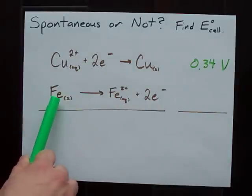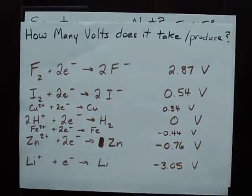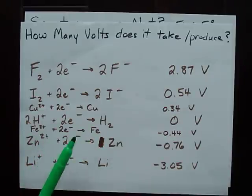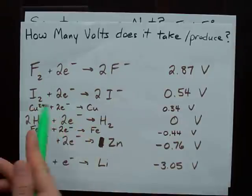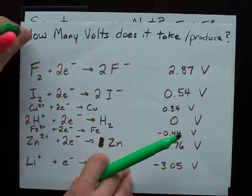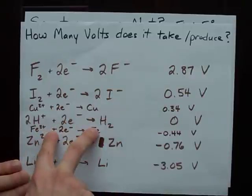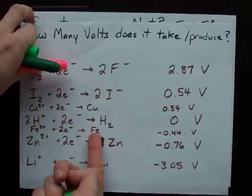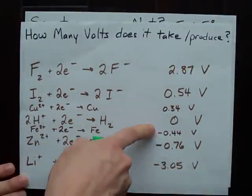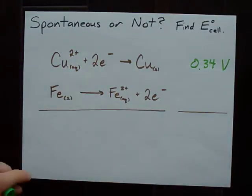Now, here I've got iron becoming iron 2+ and 2 electrons. What I have written in my table of reduction potentials is not that. I've got iron 2+ and 2 electrons becoming solid iron. That's the exact reverse. The reason is, this is a table of reduction potentials. These are all reductions or gains of electrons. This here is written as an oxidation. So if I flip this, I have to flip the sign of the voltage. This becomes plus 0.44 volts.